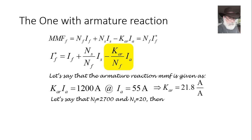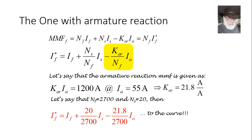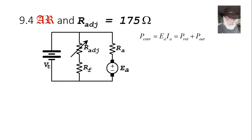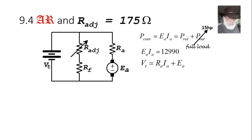We compute the equivalent field current for this machine. It equals the actual field coil current plus the series coil contribution (zero here, no series coil) minus k_AR divided by the number of field turns times the armature current. The formula simplifies since there is no series coil. The converted power including rated output is 12,990 watts, and the KVL equation remains unchanged, giving Ea = 216 volts.